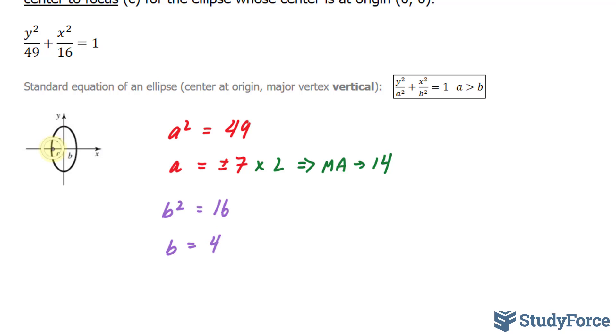And just to understand, b is the distance from here to the center. To find the minor axis, we multiply it again by 2. That gives us our minor axis, and that is equal to 8.